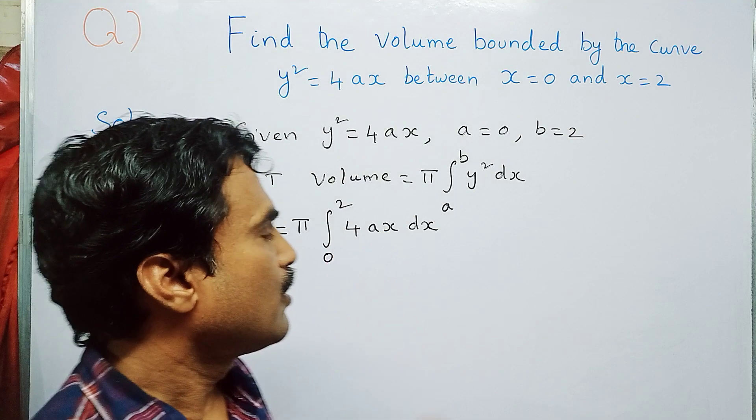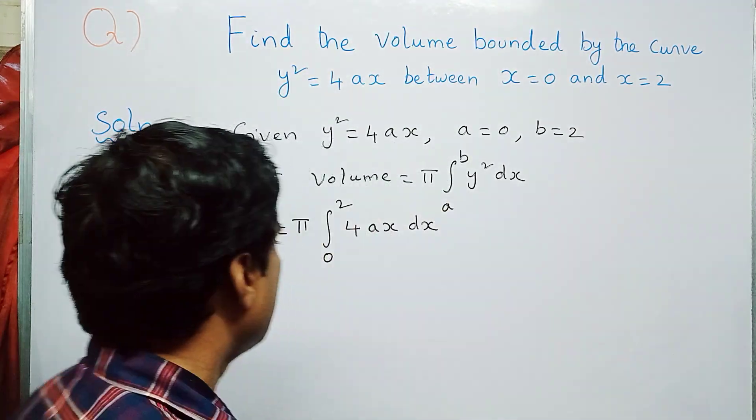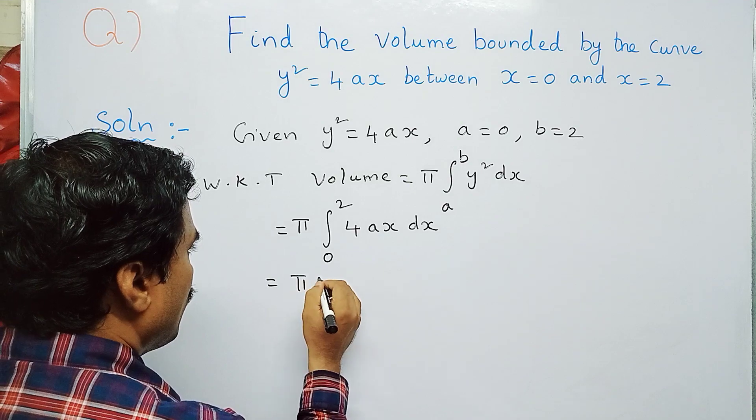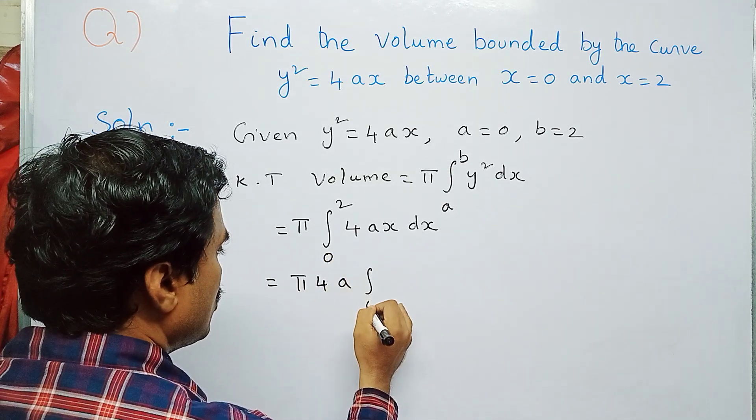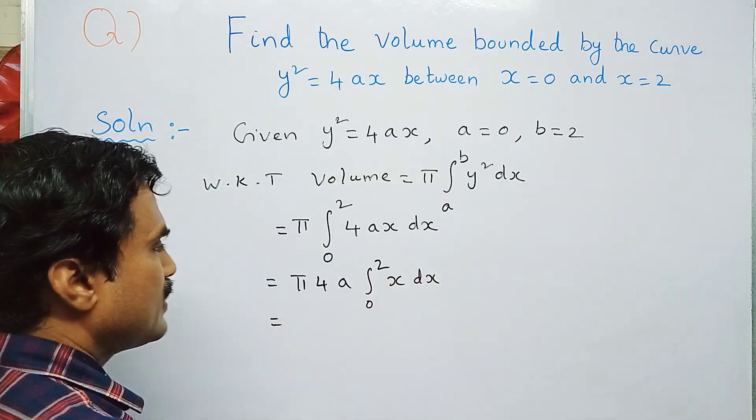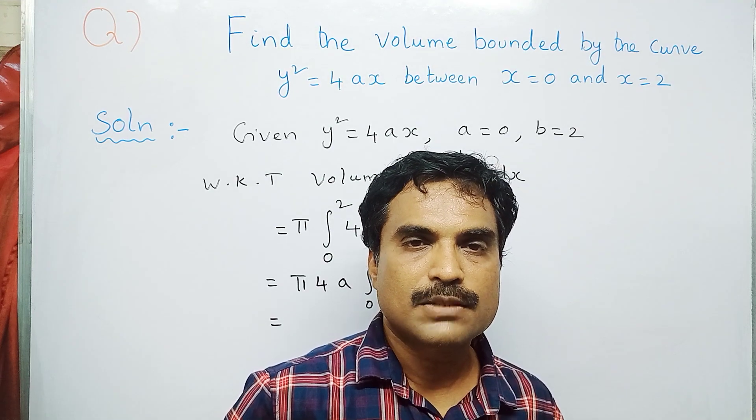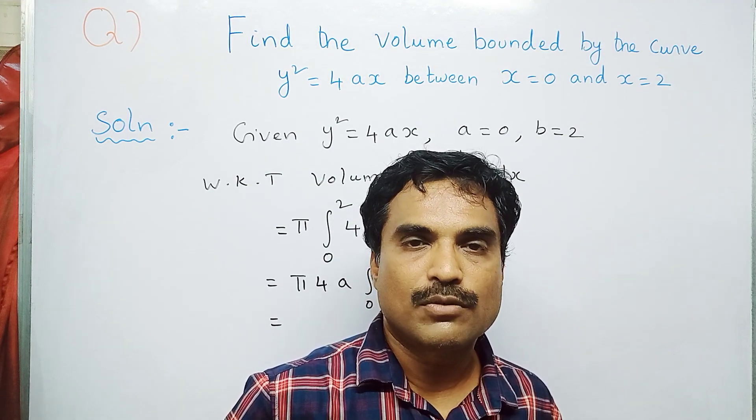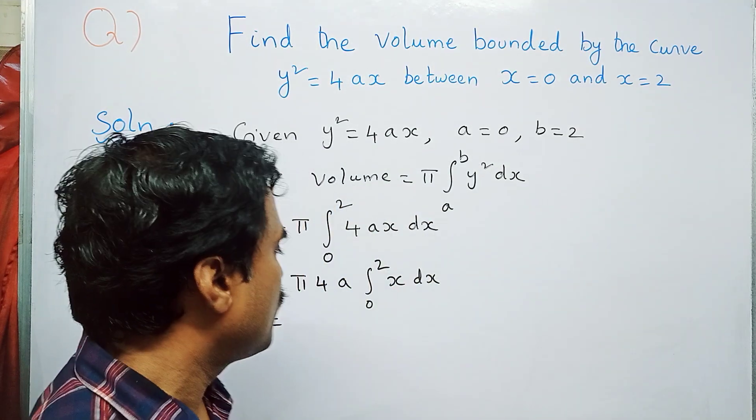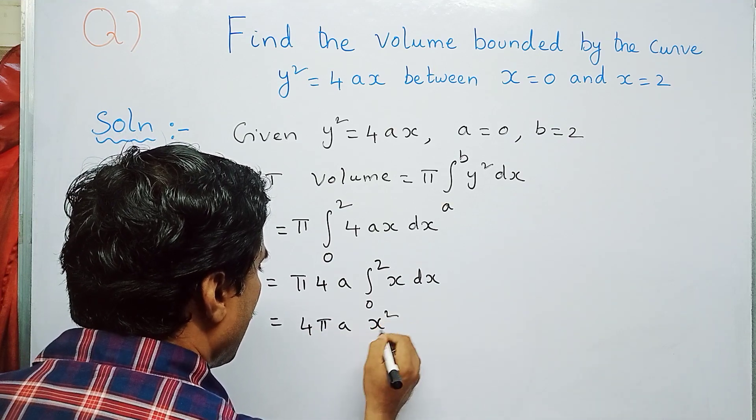So this is equal to, now if you observe, 4ax: 4 is a constant, a is a constant, so you can take π·4a outside. Now ∫[0 to 2] x dx. Now to solve this integral, we have to use the formula ∫ xⁿ dx = xⁿ⁺¹/(n+1). Here n value is 1, so this will become 4πa [x²/2] with limits 2 and 0.